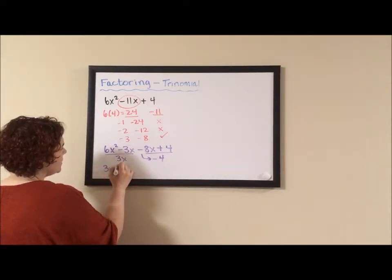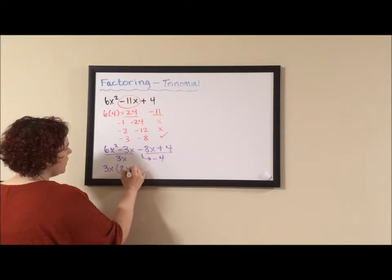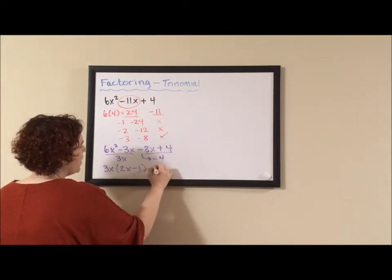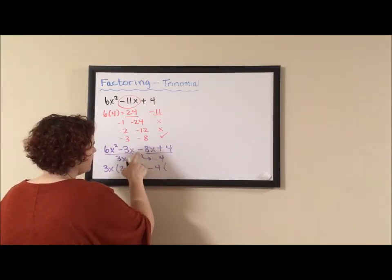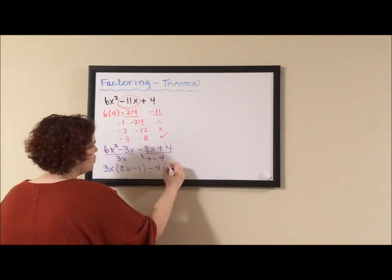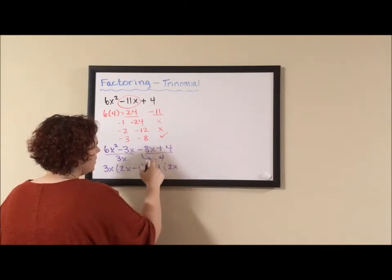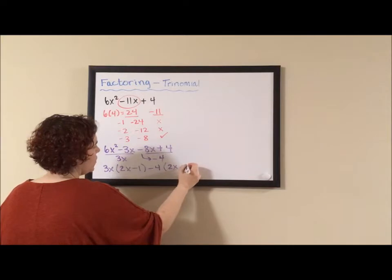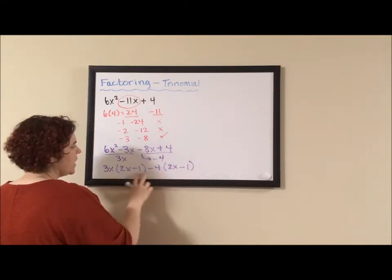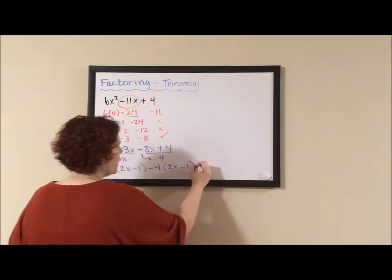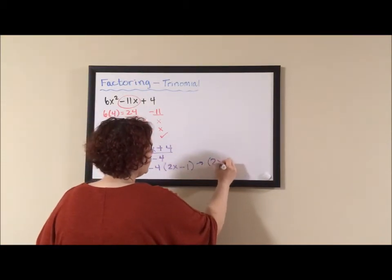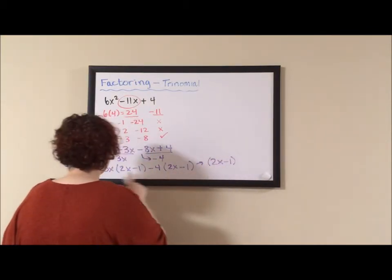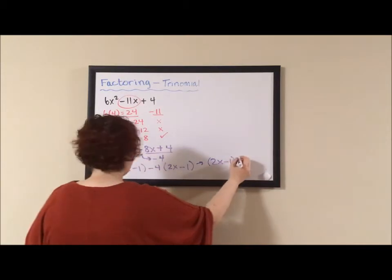I'm going to pull out a negative 4. If I pull out a 3x, I'm left with 2x minus 1. If I pull out a negative 4, I'm left with a negative divided by negative. That's 2x minus 4 divided by 4 is 1. Because what is inside the parentheses are the same, I'm going to write what's in the parentheses, and I'm going to write what's out of the parentheses.